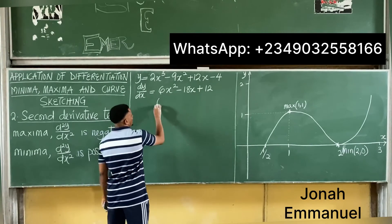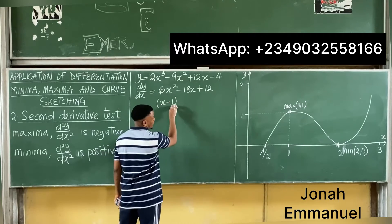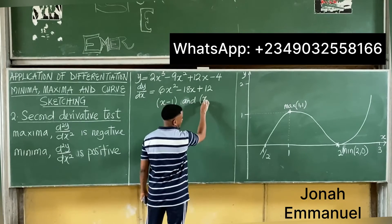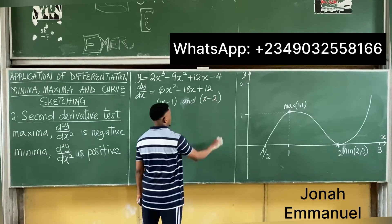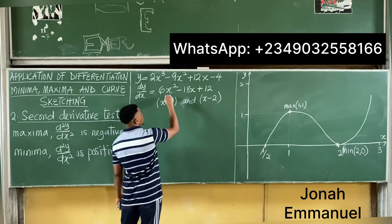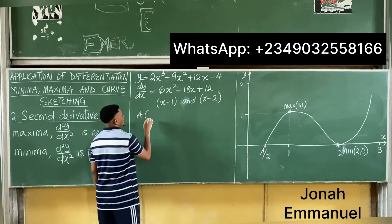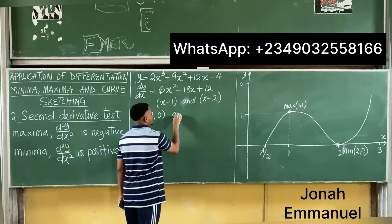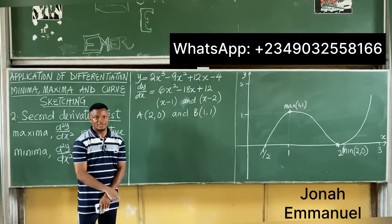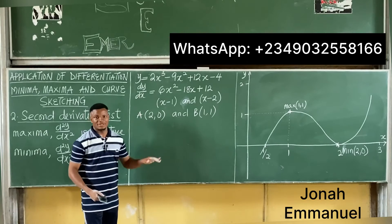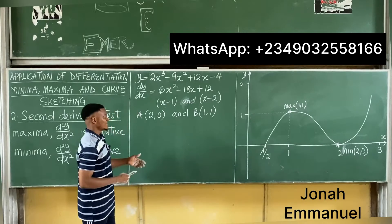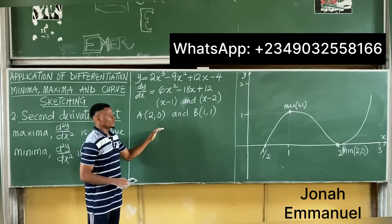We factored dy/dx and got factors (x - 1) and (x - 2), giving us two turning points: point A at (2, 0) and point B at (1, 1). I'll explain this in detail in our first class, so if you missed it please check the description for the link.